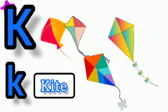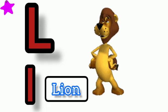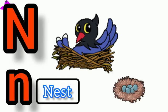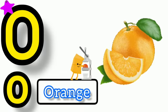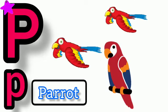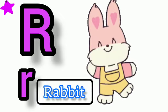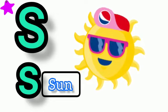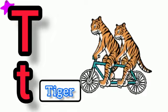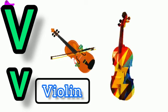K for kite. L for lion. M for monkey. N for nest. O for orange. P for park. Q for queen. R for rabbit. S for sun. T for tiger. U for umbrella. V for violin.